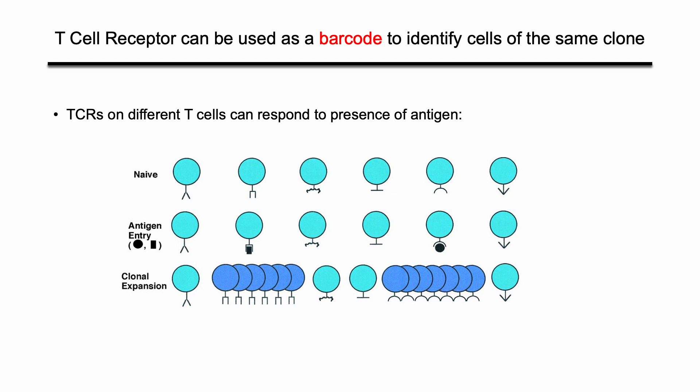TCR sequencing is powerful because T cell receptors can be used as a barcode to identify cells from the same clone. Naive T cells have a diverse but not expanded T cell repertoire. When the receptors bind to specific antigen, the cell will be activated and expand into a clone, and all the cells in the clone will have exactly the same T cell receptor. Therefore, we can determine if two cells were originated from a common ancestor by comparing their T cell receptor sequences.